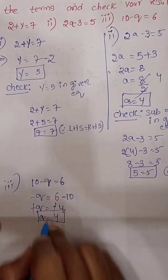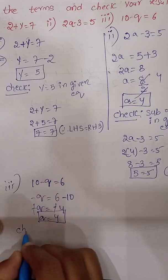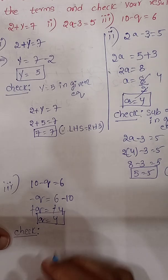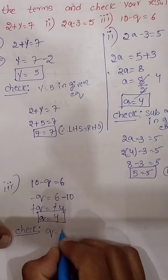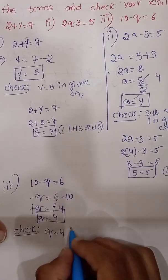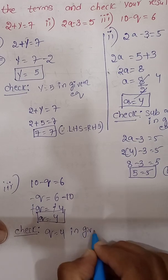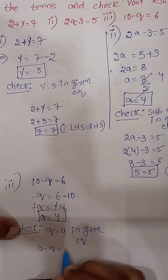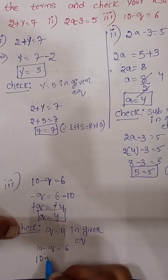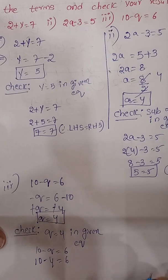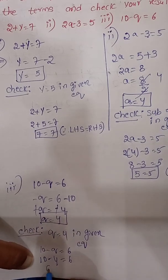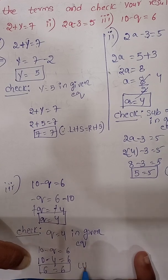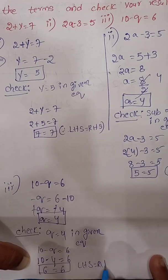Check: substitute Q equal to 4 in the given equation 10 minus Q equal to 6. We get 10 minus 4 equal to 6. LHS equals RHS, so our answer is correct.